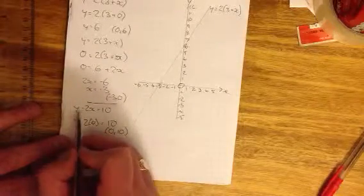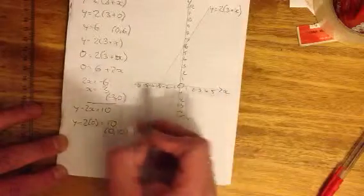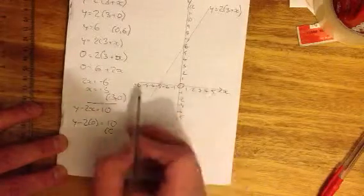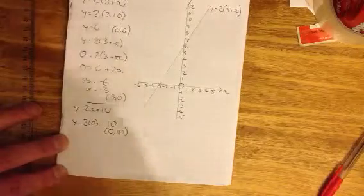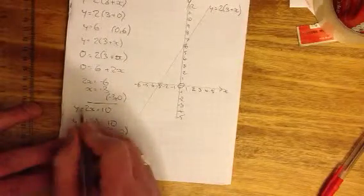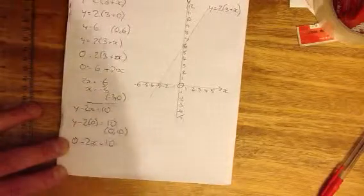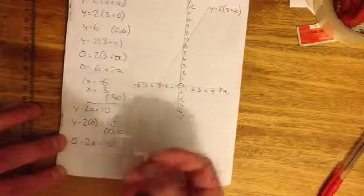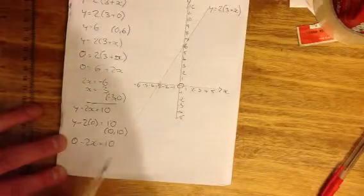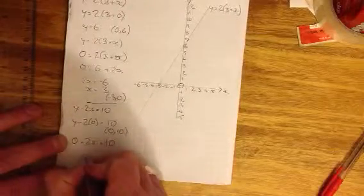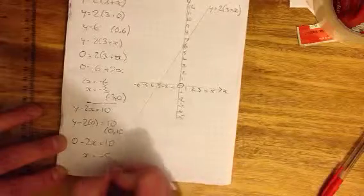Now we're going to substitute in a value of 0 for y, because we're finding out where the line crosses the x-axis, which is also the line y equals 0. So I'm going to substitute in 0 take away 2x equals 10. So minus 2x equals 10. Divide minus 2x by 2, we've got minus x. Divide 10 by 2, we've got 5. Minus x is 5. So x equals minus 5. That gives us a set of points minus 5, 0.